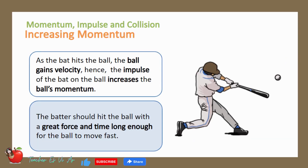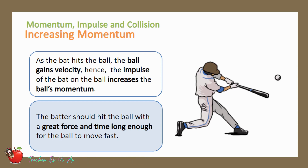Let us consider a collision between a bat and a ball. As the bat hits the ball, the ball gains velocity; hence, the impulse of the bat on the ball increases the ball's momentum. To maximize this change in momentum, the batter should hit the ball with a great force within a time interval long enough for the ball to move fast.